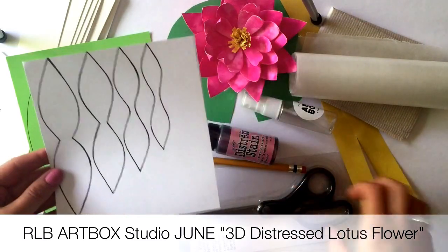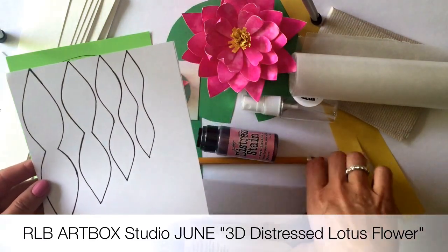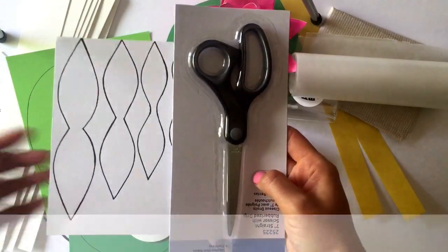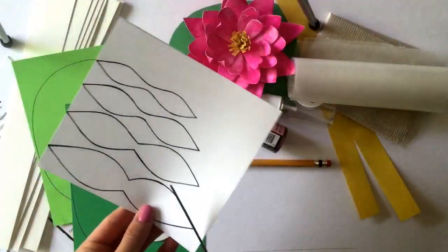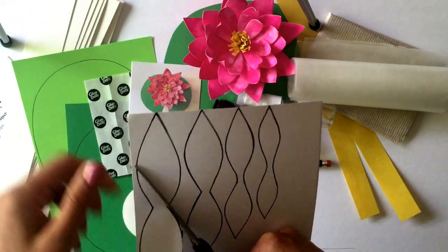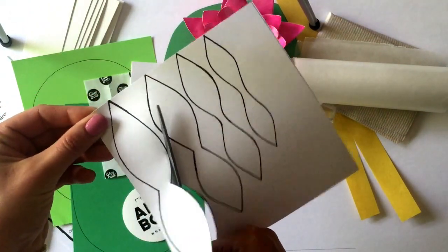Step one, locate the petal cutout stencils and the scissors. Using the scissors, carefully cut out the petal stencils. You will later use these to trace onto the watercolor paper.